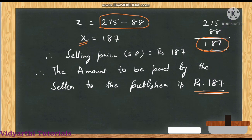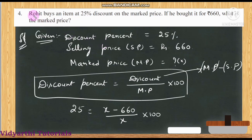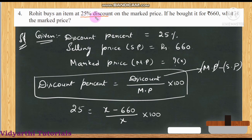Question number 4: Rohit buys an item at 25% discount on the market price. If he bought it for ₹660, what is the market price? Discount percentage is 25% and selling price is ₹660. We need to find the market price.